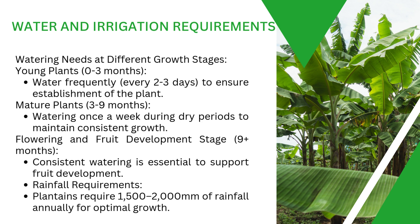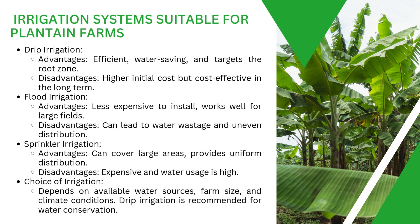To know the amount of rainfall you're getting, always check the weather forecast during that season. If rainfall is insufficient, you need to provide supplemental water — which is why you must have a water source close to your farm or a means to bring water there.